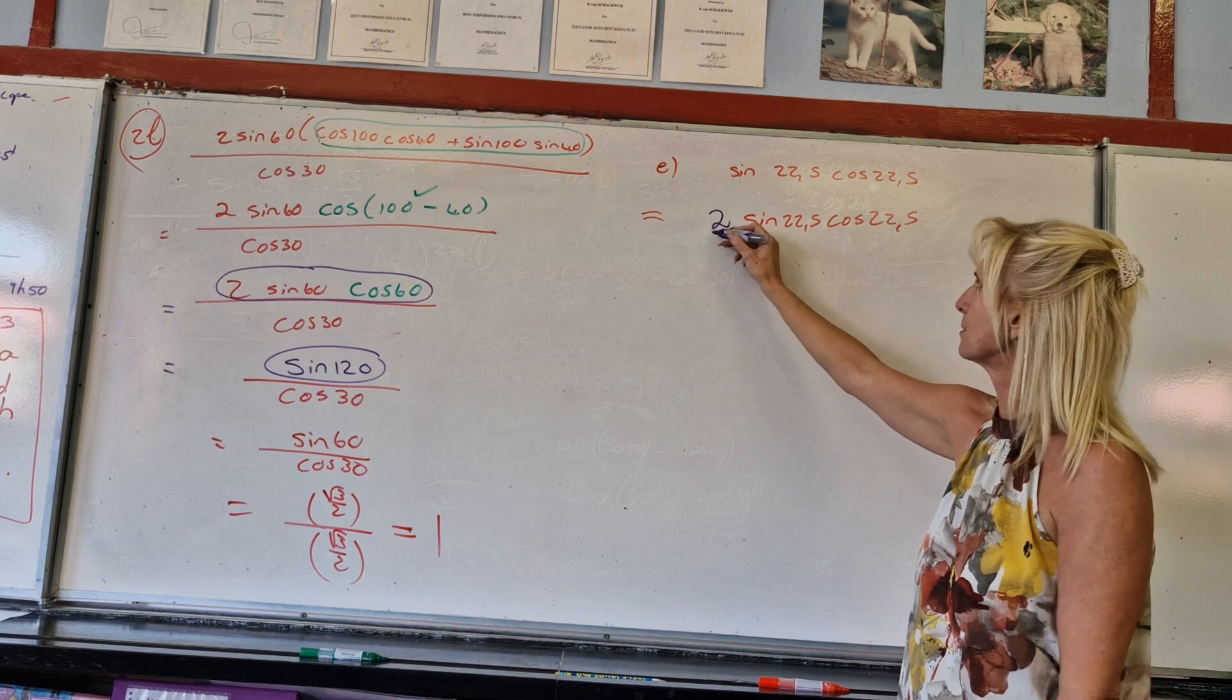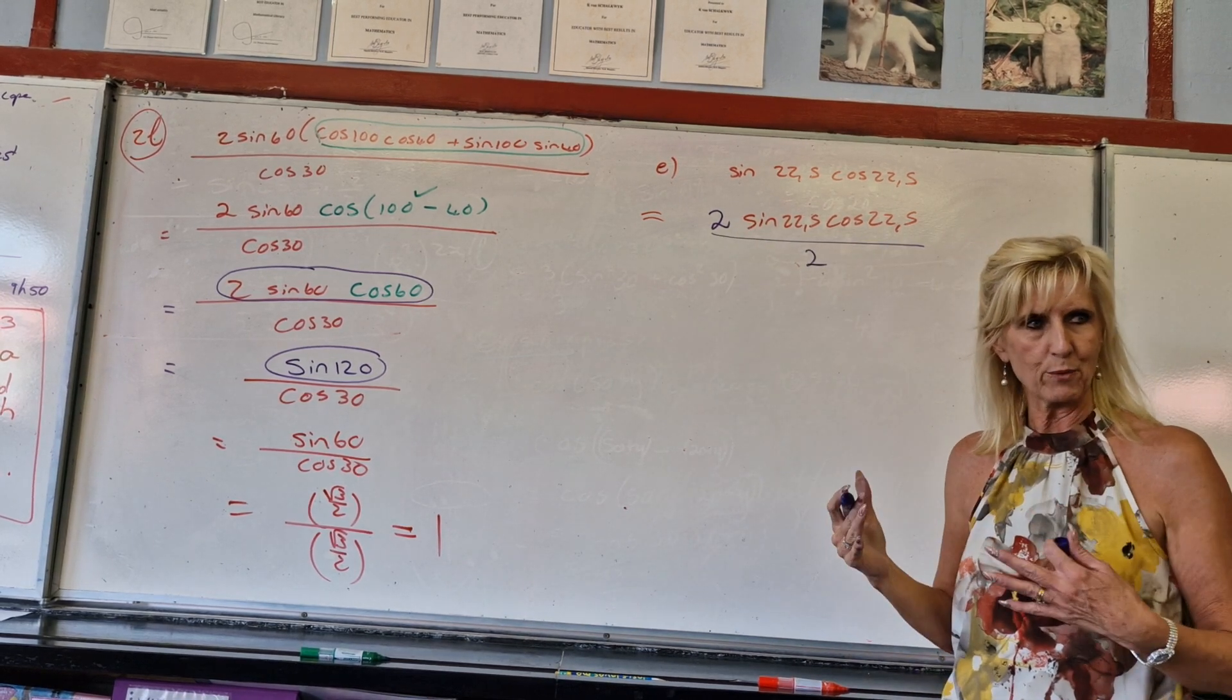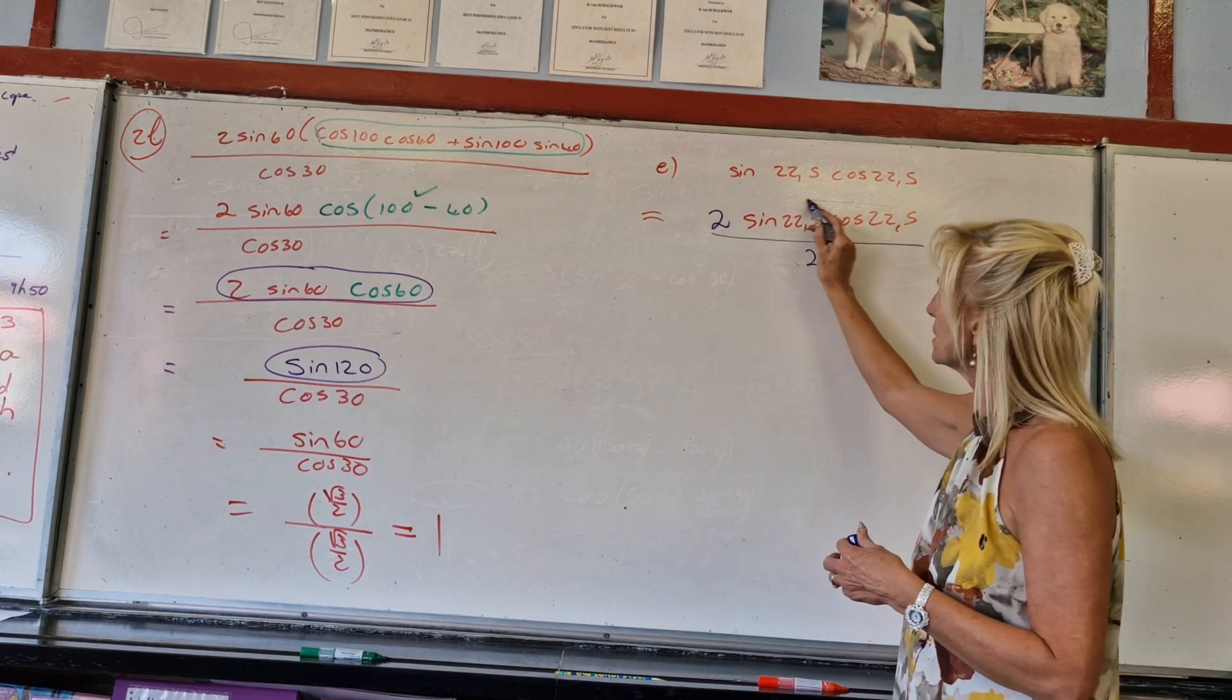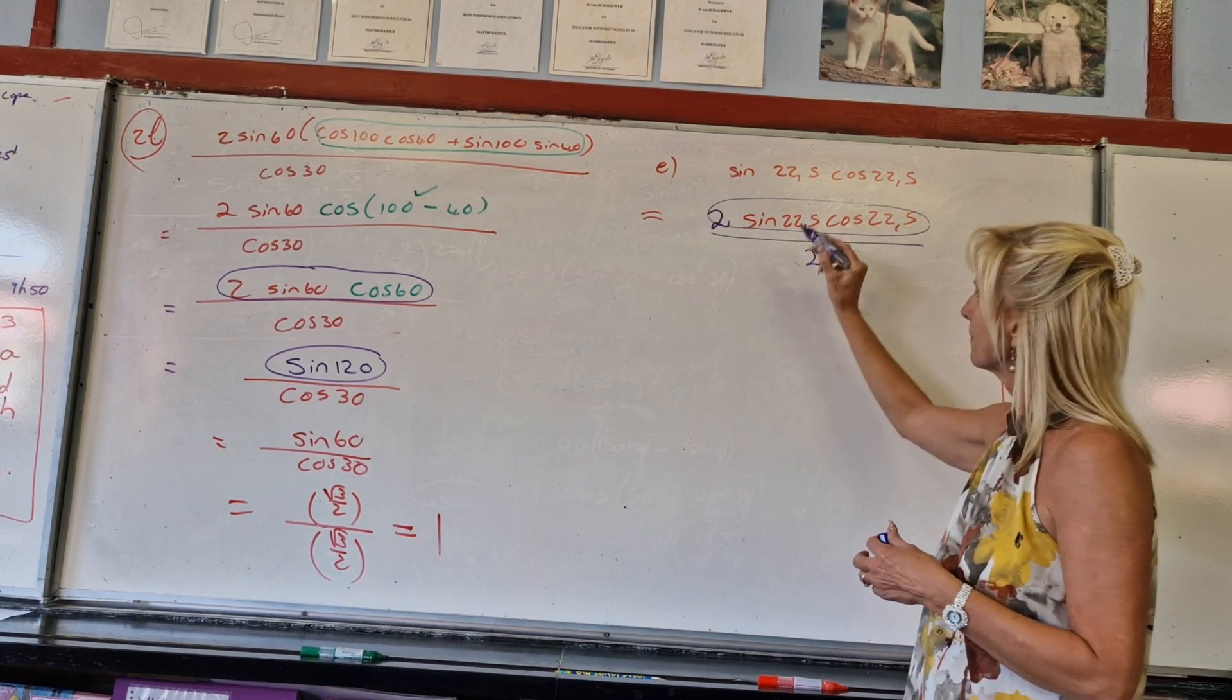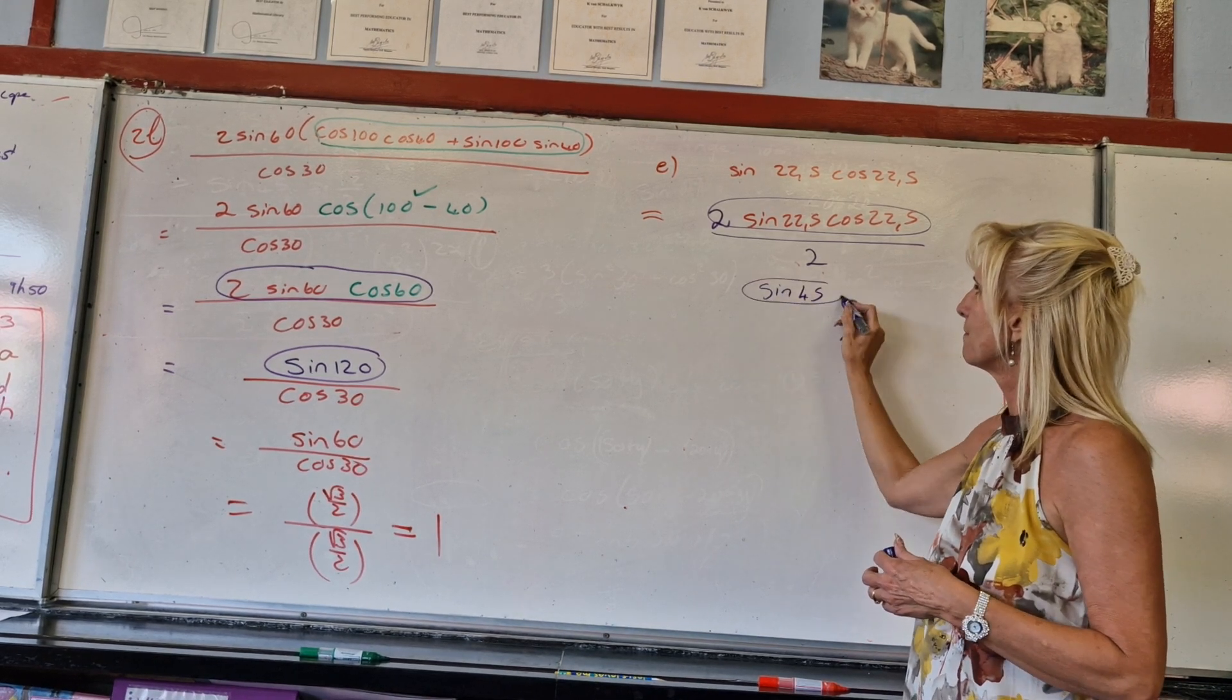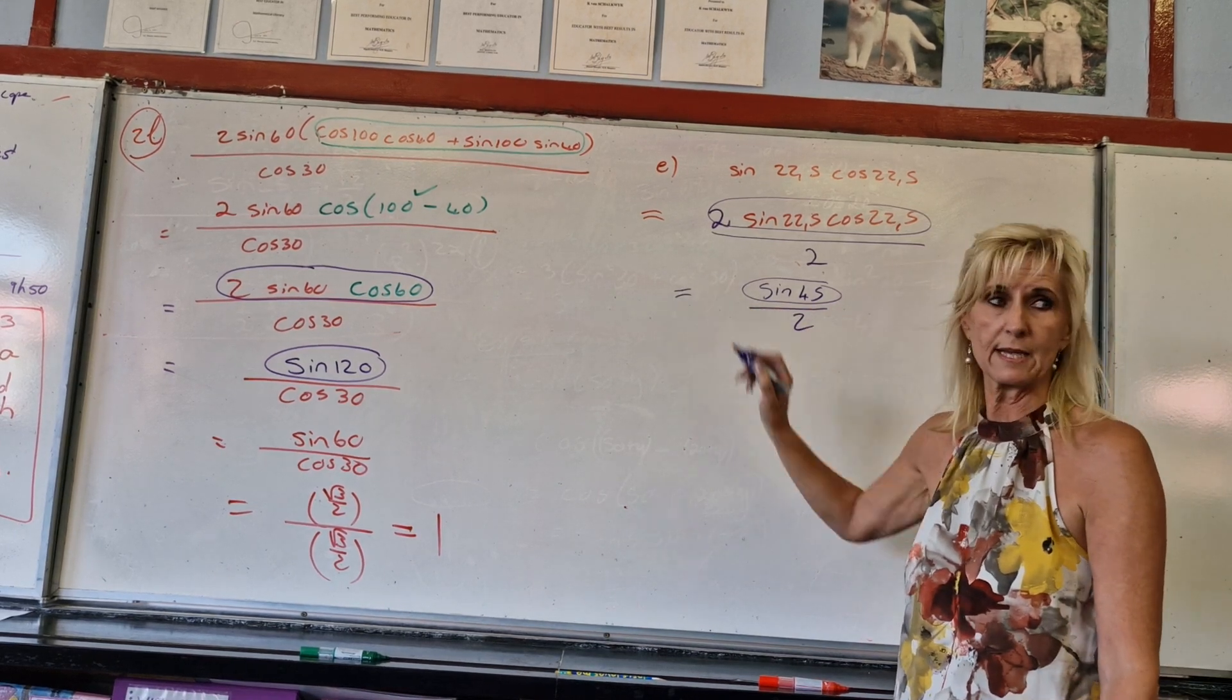Divide by 2. But please don't do that. Because then you're back when you started. What did I want to do with this? I wanted this to be a double angle of 22.5, which is 45. But the 2 has to be there. Otherwise it's not the same.